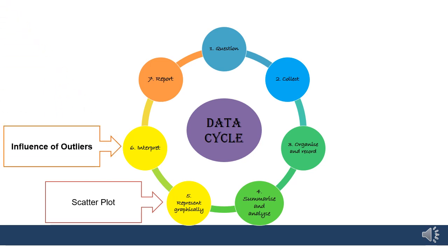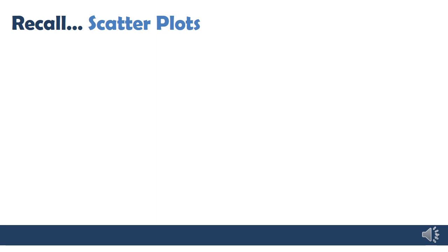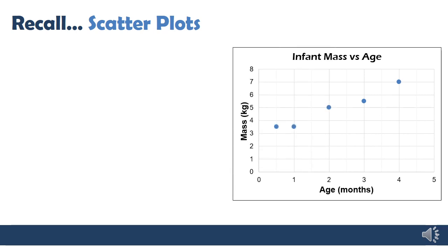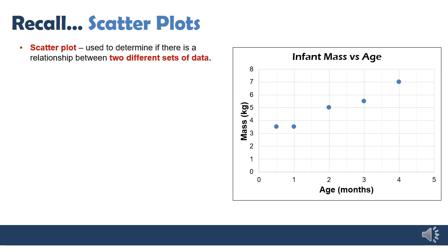We want to figure out what influence these outliers are having on the rest of our analysis. Remember in grade nine we learned about scatter plots. A scatter plot is a type of graph where we show two different types of data sets. In this case, I'm looking at infant mass versus age — the age of the baby on the x-axis and its mass on the y-axis. We use a scatter plot to figure out if there's a relationship between these two data sets. Whenever we have two data sets about the same thing — each baby has an age and a mass — we call that bivariate data.